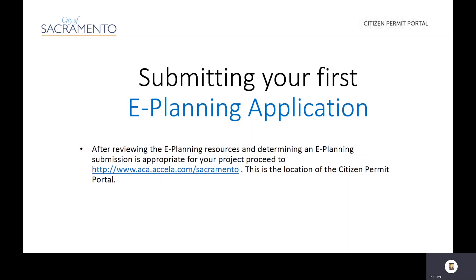After reviewing the ePlanning resources and determining that an ePlanning submission is appropriate for your project, proceed to the Citizen Permit Portal at aca.accela.com/Sacramento. We'll now proceed over to the portal where I'll demonstrate the navigation and submission of an application.